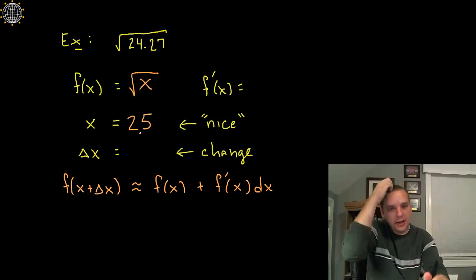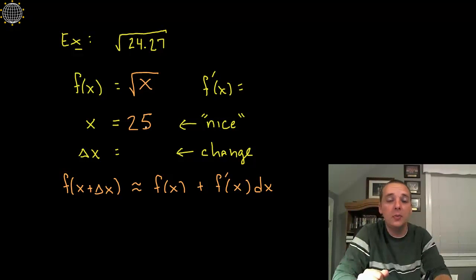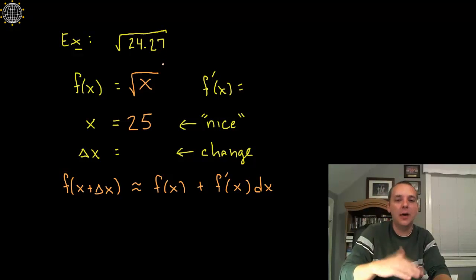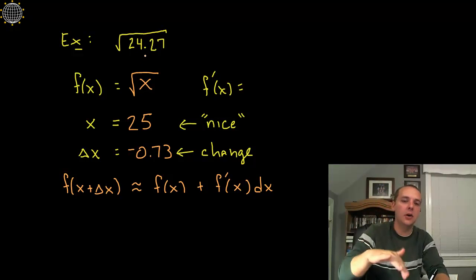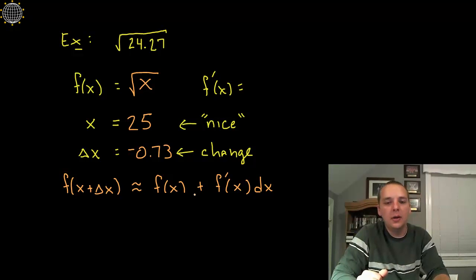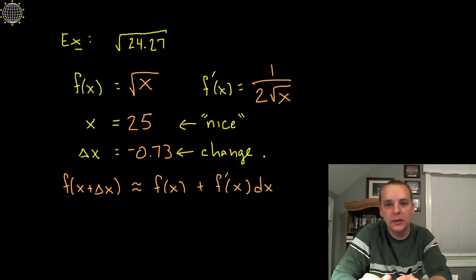Now if your nice x value is 25, then what's the change in x between our x value and the one in question? Well it's 0.73. However, 24.27 is 0.73 less than 25, not more. So the delta x would be negative 0.73. Notice that it's negative since this quantity is under 25. Now one thing we're going to need in our formula here is the derivative of f, basic derivative rules, it would be 1 over 2 root x.